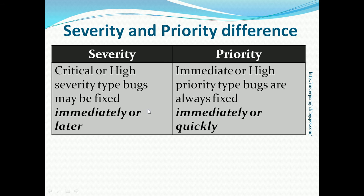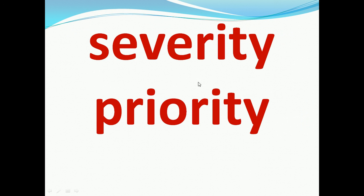Lastly, critical or high severity bugs may be fixed by developers immediately or later, depending on their priority. But immediate or high priority bugs are always fixed immediately or quickly. I hope that you now have a better grasp on priority and severity. Thank you and see you in my other videos.